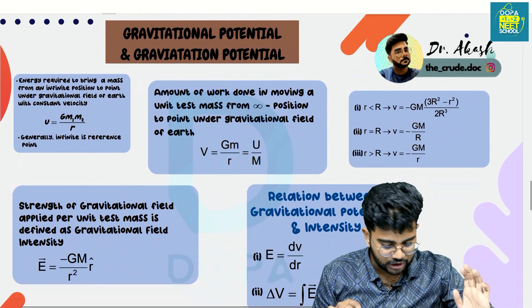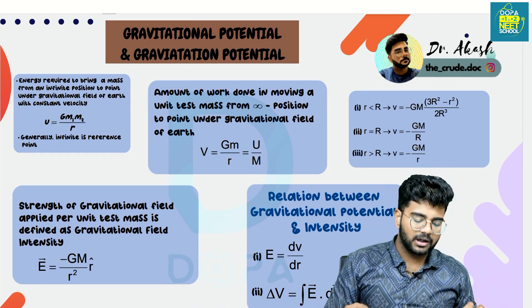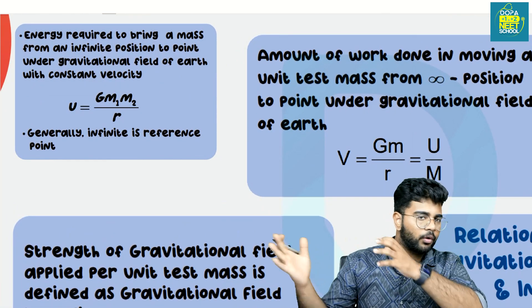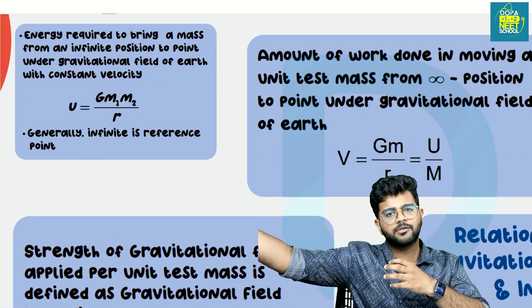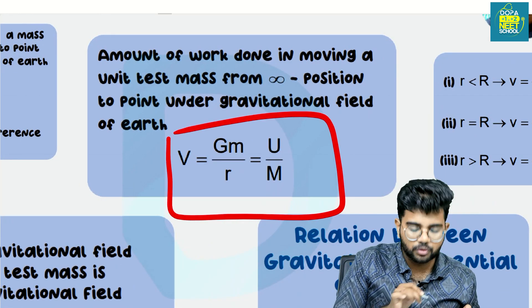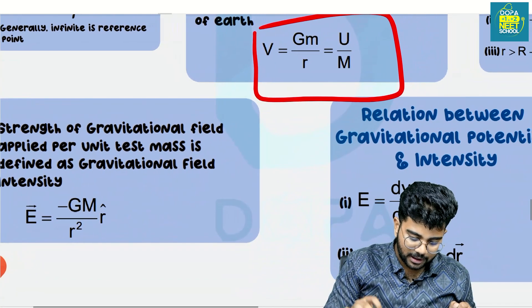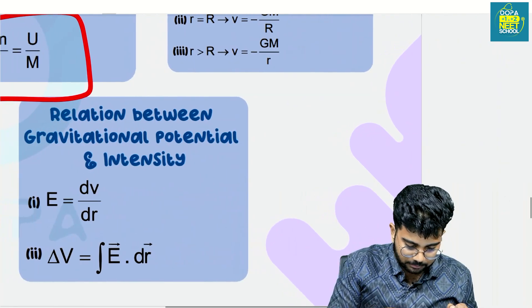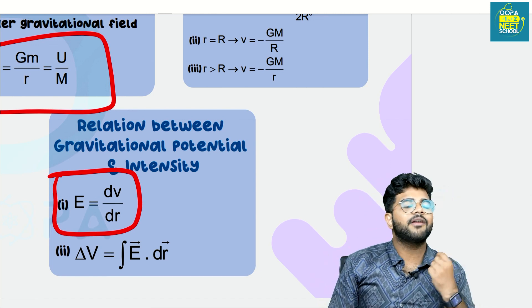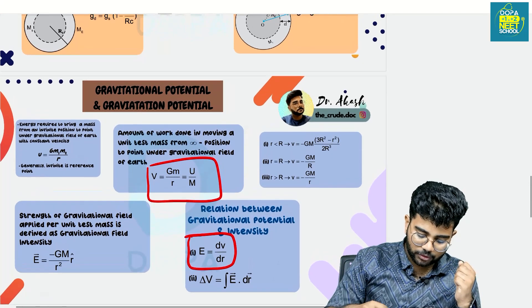What is gravitational potential? It is the energy required to bring a mass from space to a particular point. The important equation is V is equal to GM divided by r. Also important is the relation between gravitational potential and intensity.